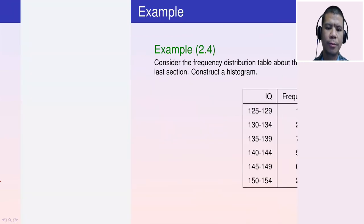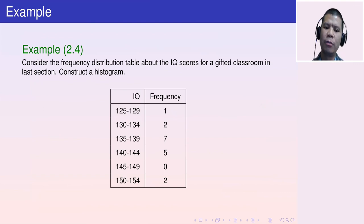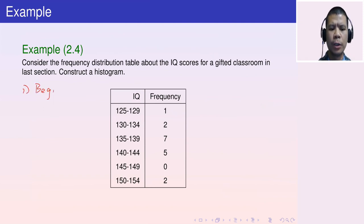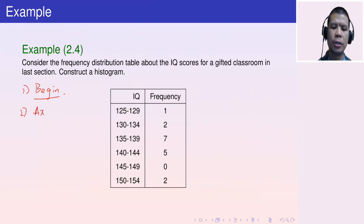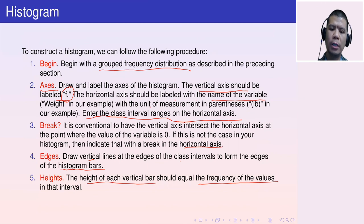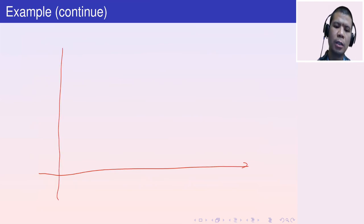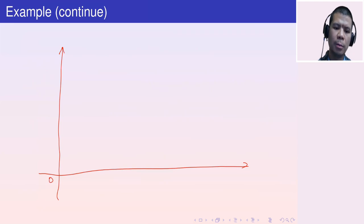Consider the IQ score frequency distribution table from the previous example. Step one: we already have the table. Step two: draw the axes. The vertical axis is labeled F, with tick marks from 1 to 7. The horizontal axis is labeled 'IQ score' — IQ scores do not have a unit of measurement.